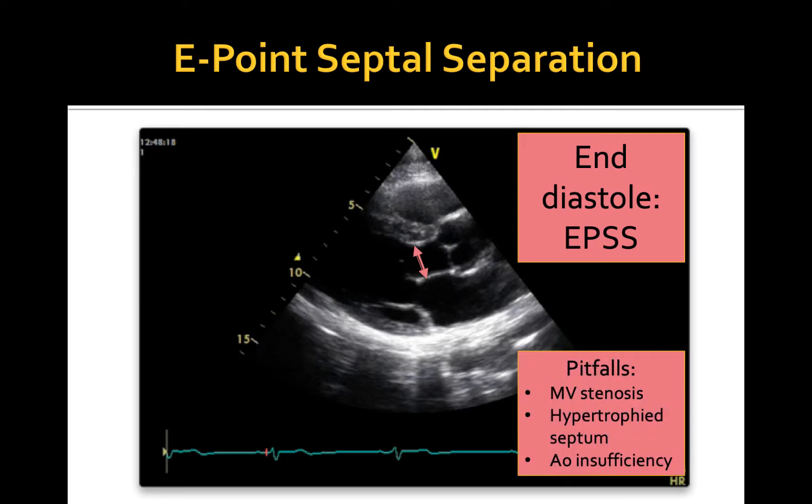There are several pathologic conditions that will decrease EPSS even in the face of normal LV function. These conditions include mitral valve stenosis, hypertrophied interventricular septum, and aortic insufficiency.